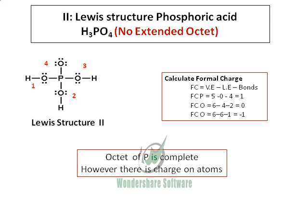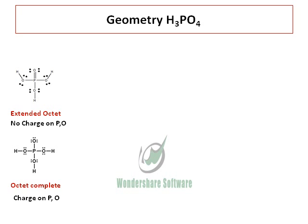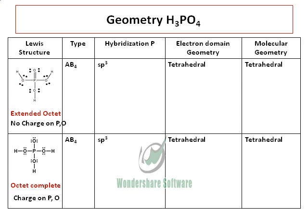Let us sum up the geometry of phosphoric acid and the Lewis structures. We have one Lewis structure with extended octet, and another in which the octet is complete. The extended octet structure has a P double bond O and 10 electrons around phosphorus, while the octet-complete structure has all 4 bonds between phosphorus and oxygen as single bonds with just 8 electrons. The key difference is that the octet-complete structure has formal charges on phosphorus and one oxygen, whereas the extended octet structure has no formal charge. Both are AB4 type molecules.